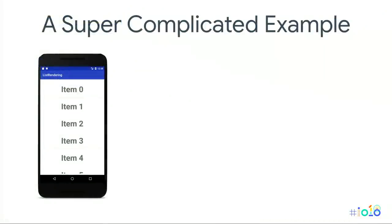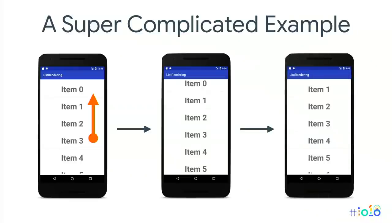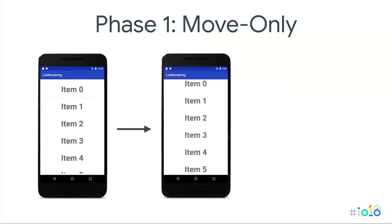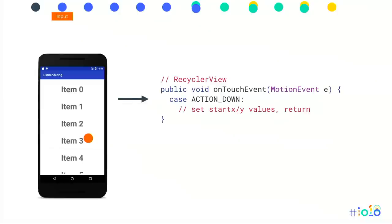Now a more complex example in two phases. We're going to drag the list up — first just moving items, then eventually a new item appears at the bottom. For the move-only phase: we have a VSync, process input, and end up in onTouchEvent in RecyclerView. There was a down event — all it needs to do is register where the down happened. Nothing changed on screen, so we record that for later and there's a no-op. We don't do any of the rest of the pipeline because nothing changed.